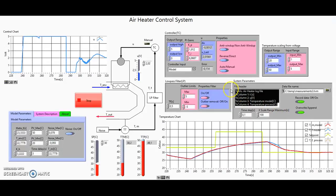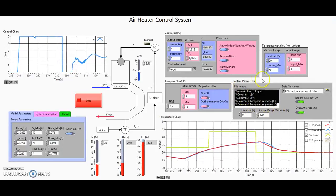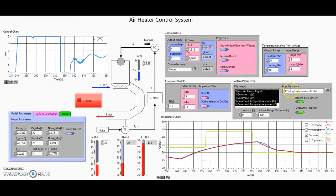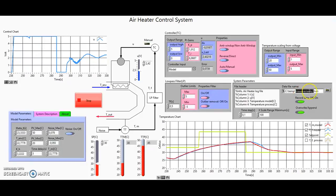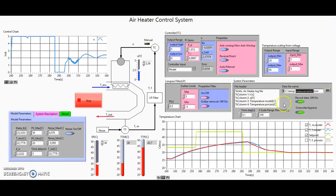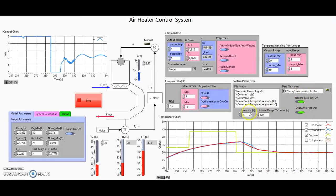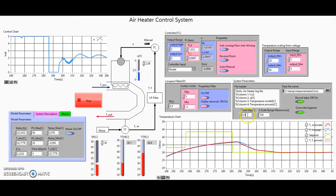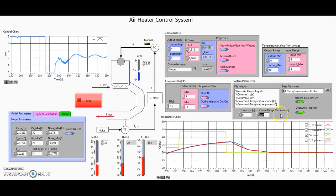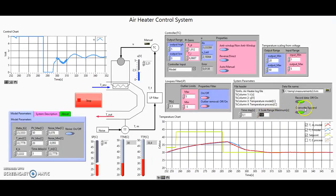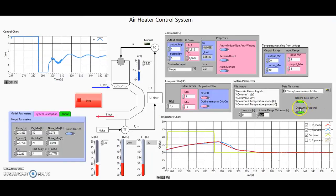Here you have the file header which goes into the measurement file. Here is the path and the measurement file name. We can turn recording of data on and off. Here is the time step for the entire system, some chart controls, and you can also choose to overwrite the measurement file or append to it.